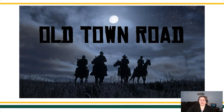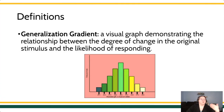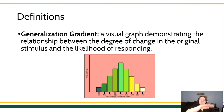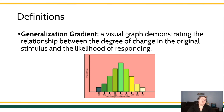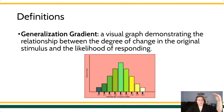What's interesting about this scenario is it embodies for us the idea of a generalization gradient. When we're talking about generalization, we're talking about whether or not we respond in the same way to a novel stimulus as we do to ones we've been trained to in the past. You can visually chart the probability of responding on a generalization gradient — it's a graph, a visual demonstration of the probability that we will respond to a novel stimulus based on the features it shares with the stimulus we have been trained to.